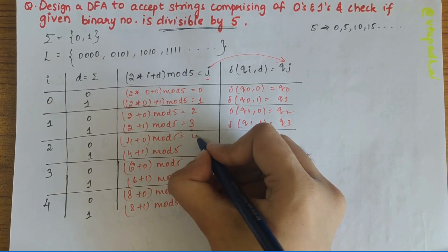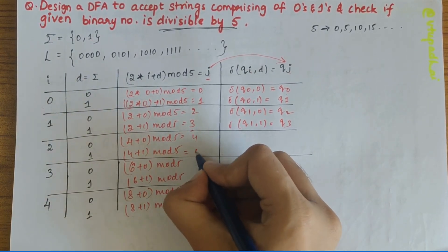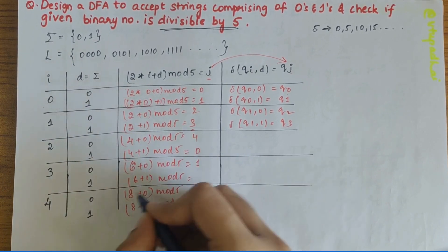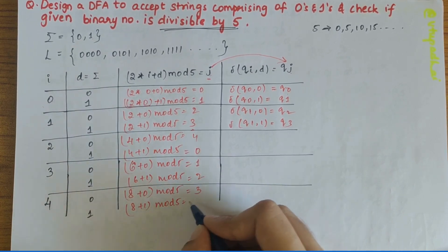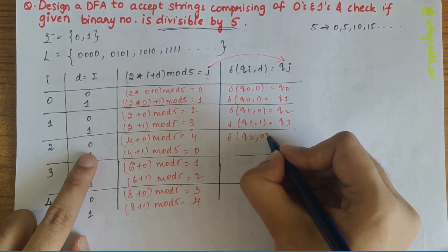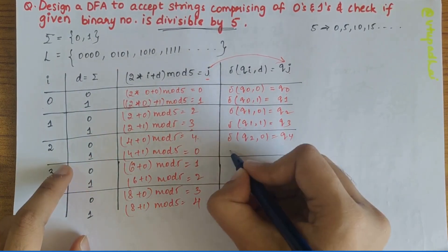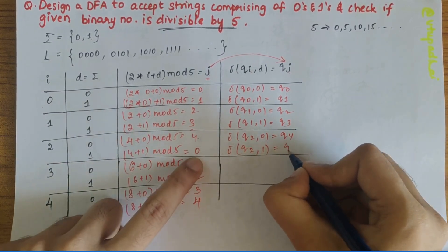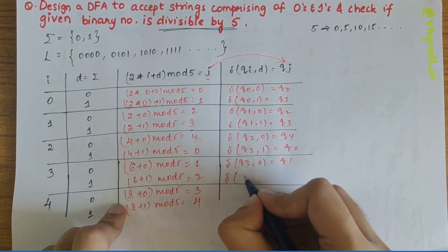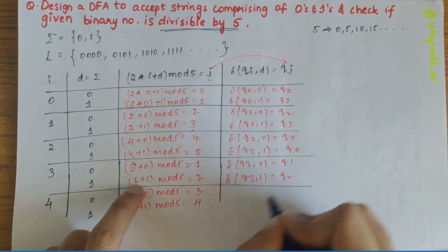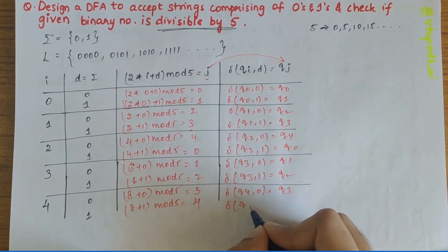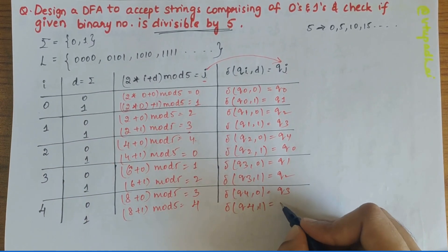So: (4+0) mod 5 = 4, and (4+1) mod 5 = 5 mod 5 = 0. Then (6+0) mod 5 = 6 mod 5 = 1, and 7 mod 5 = 2. And 8 mod 5 = 3, and 9 mod 5 = 4. So δ(q2, 0) = q4, δ(q2, 1) = q0, δ(q3, 0) = q1, δ(q3, 1) = q2, δ(q4, 0) = q3, and δ(q4, 1) = q4.